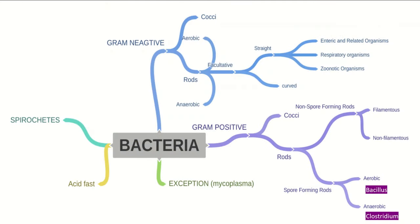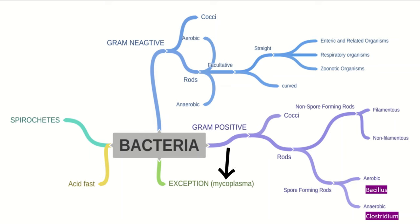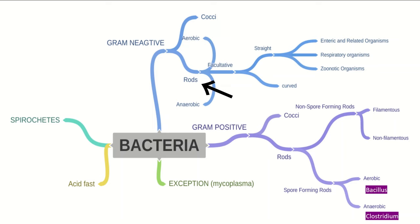Before talking about Clostridium perfringens in detail, let me give you an overview of bacterial classification. Bacteria are classified based on gram staining and acid fast stain. On the basis of acid fast stain, there are acid fast bacteria, and there are certain other bacteria like spirochetes, with an exception for mycoplasma bacteria. On the basis of gram staining, bacteria are classified into gram negative and gram positive.